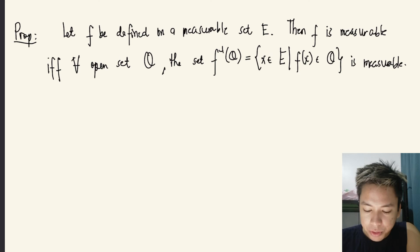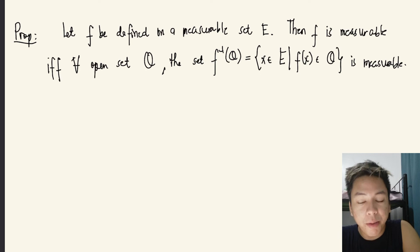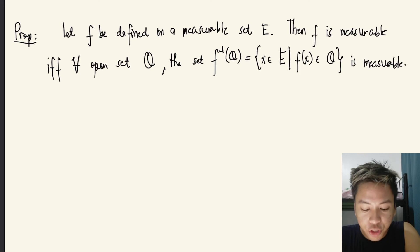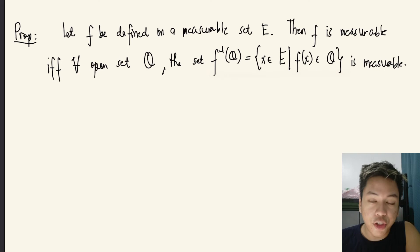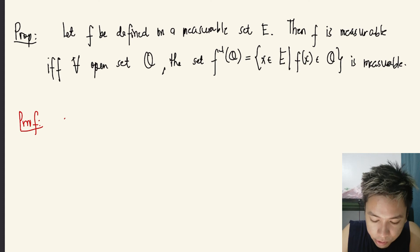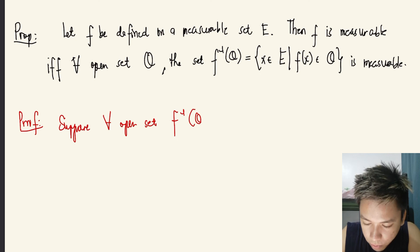We have one important result for the study of Lebesgue measurable functions. Given a function defined on a measurable set e, f is measurable if and only if for every open set O, the inverse image f⁻¹(O) — the set {x∈e : f(x) ∈ O} — is also measurable. Suppose for every open set O, f⁻¹(O) is measurable.